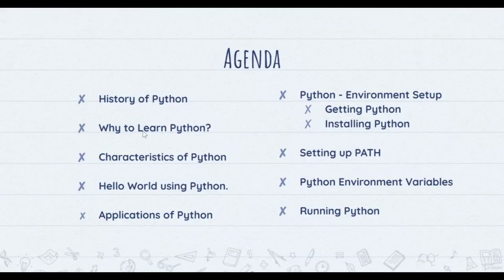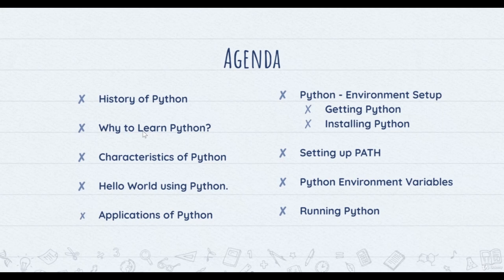The agenda for this tutorial covers the history of Python — who and where it originated — and then the reasons why we go with Python as a language. We also discuss characteristics of Python and the Hello World program. I'll help you with a small open source tool used for compiling and executing in real time, and also cover the tools and applications of Python.